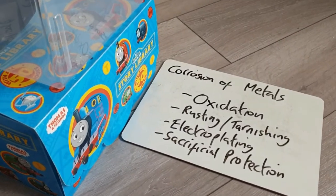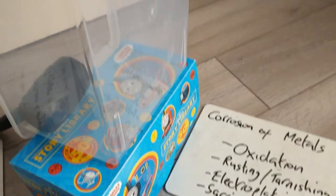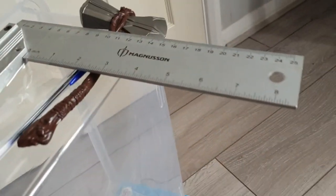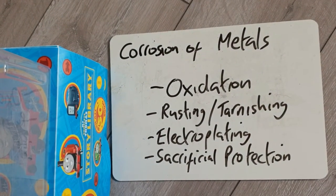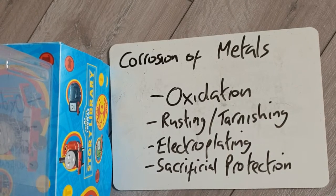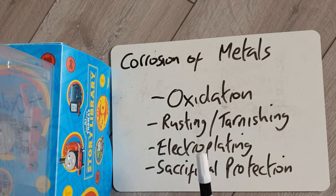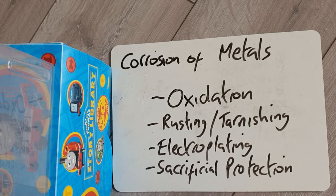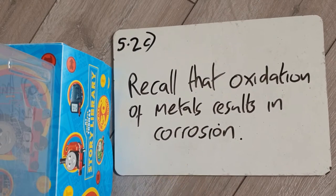Today's lesson is about corrosion of metals. We're going to talk about oxidation, rusting, tarnishing, electroplating, and sacrificial protection.